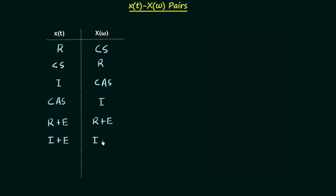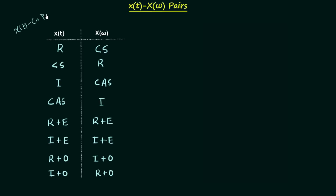When x(t) is real and odd, X(ω) is imaginary and odd. And by using the duality property, when x(t) is imaginary and odd, X(ω) is real and odd. We have this table, and if you compare it with the table I gave in the Fourier series chapter for x(t)-cn pairs, you will find the two tables are the same. So it is very easy to remember because it applies equally to x(t)-X(ω) pairs and x(t)-cn pairs.